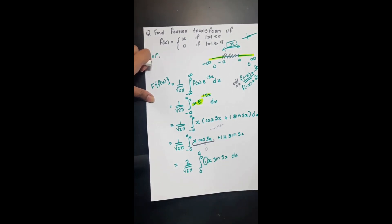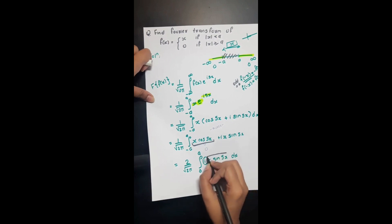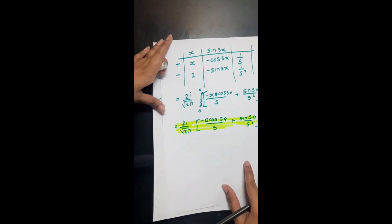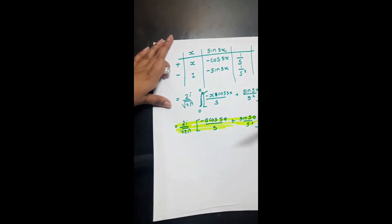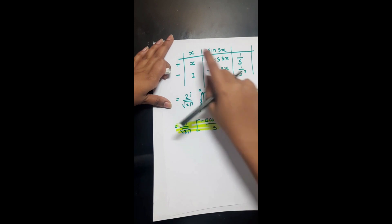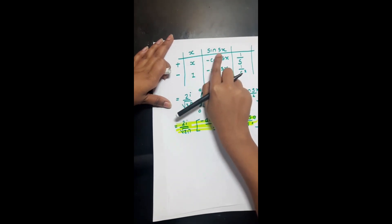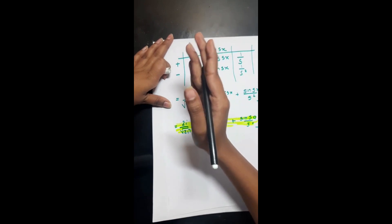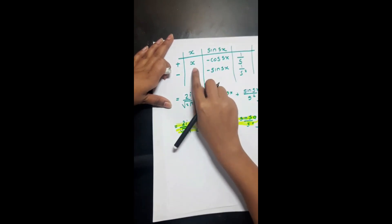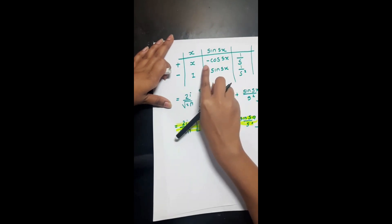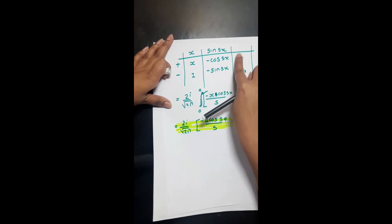Now I'll integrate x·sin(sx) using the tabular method — a shortcut that's much simpler than the ILATE rule. It's used when one term is algebraic and one is trigonometric. Write the first term x, and the integration of sin(sx) which is −cos(sx)/s.